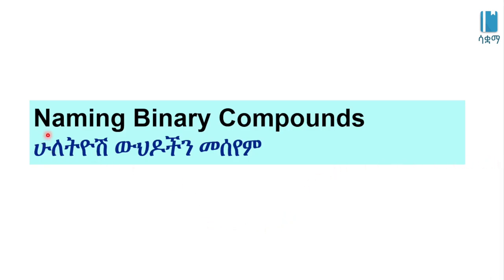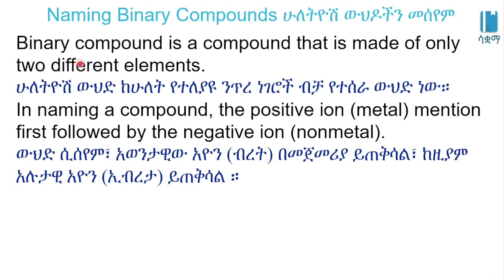This video is called Naming Binary Compounds. We are going to show you how to name binary compounds. A binary compound is a compound that is made of only two different elements.